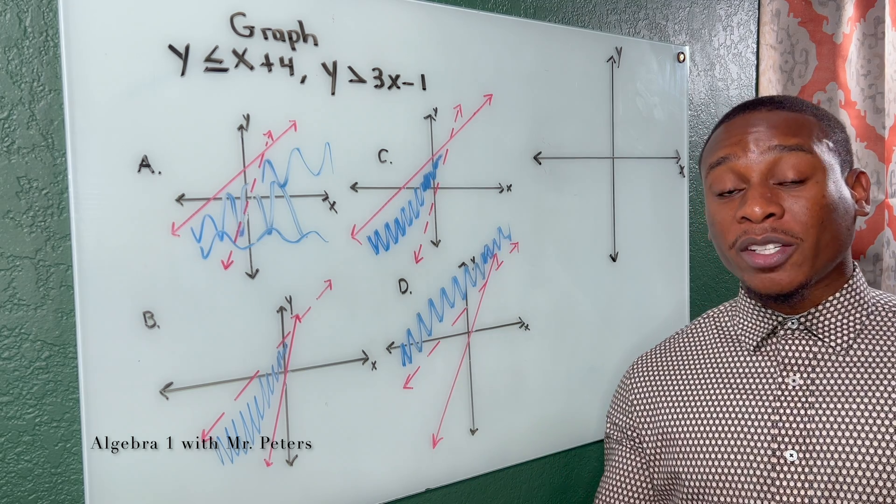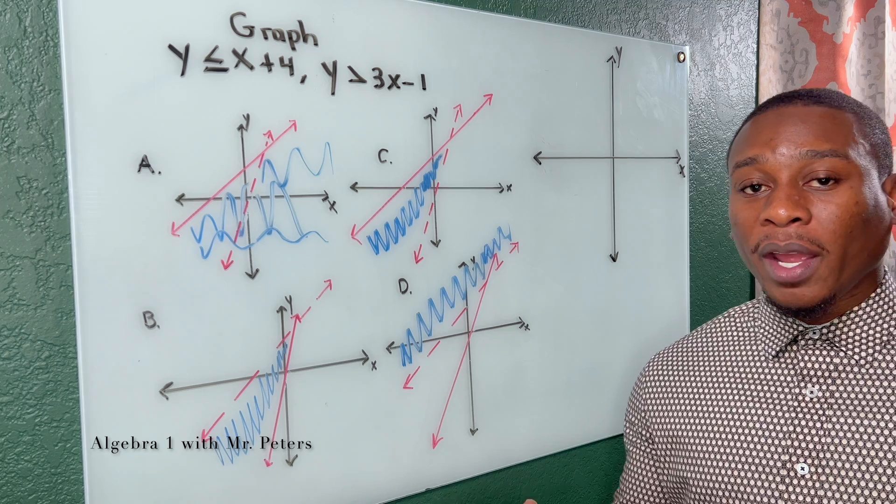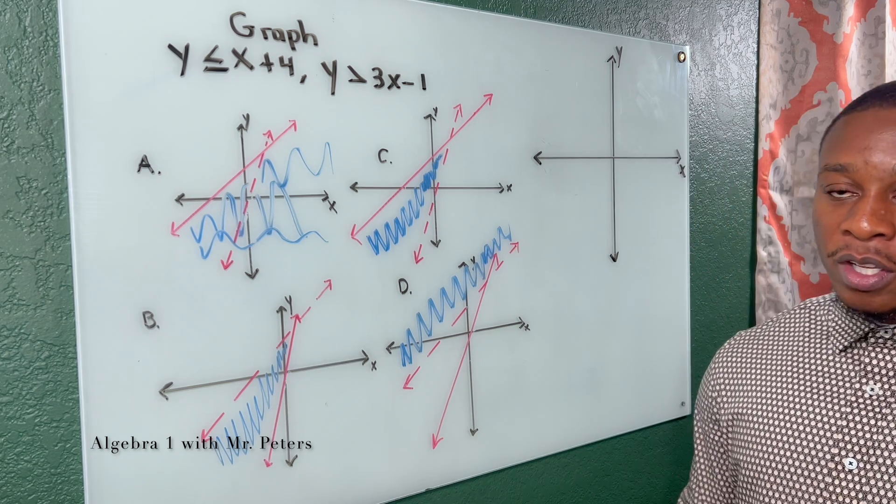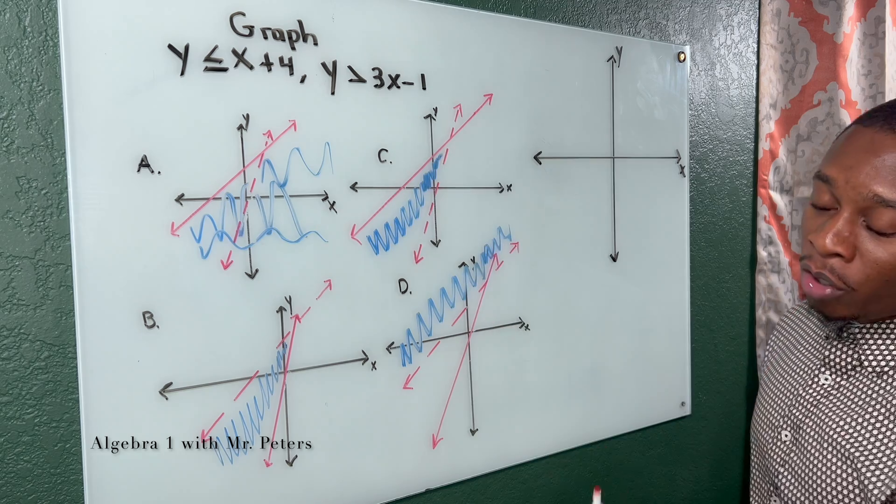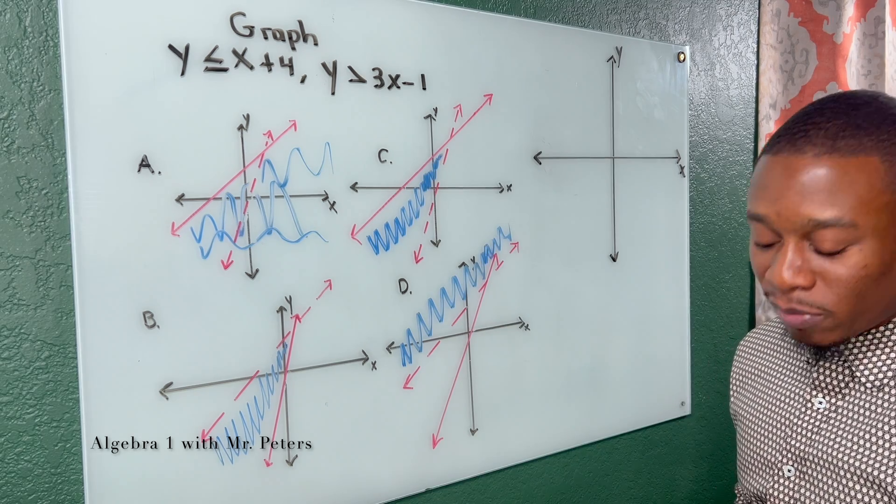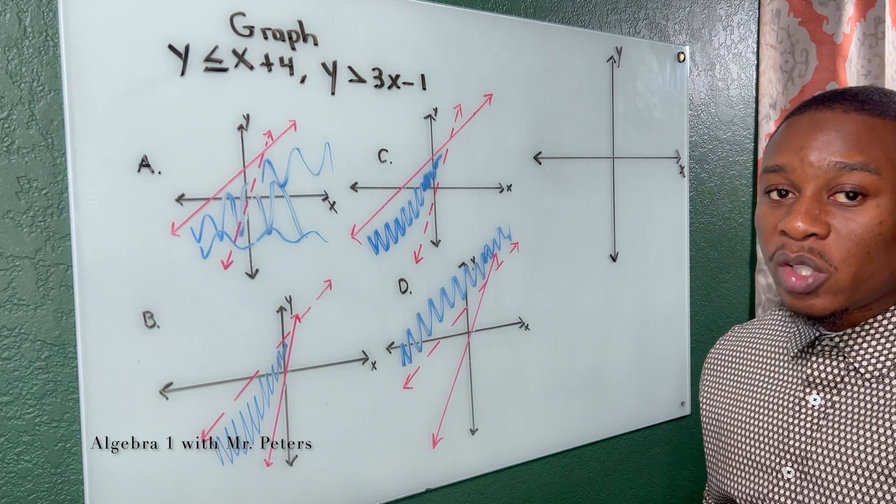The way I'm going to break this down and show this to you is I'm going to explain as I solve. So let's look at this equation right here. Y is greater than 3x minus 1.